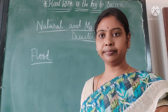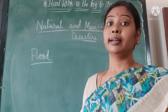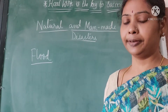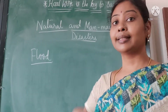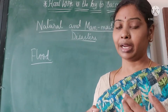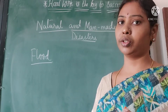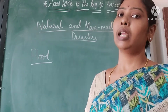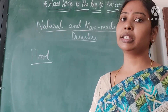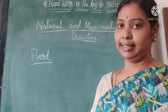Now we are going to see the first type of disaster: natural disaster — flood. What is a flood? A sudden rise in water is known as a flood. When a flood happens, a lot of human loss, economic loss, and even environmental loss happens. That is why a flood is known as a natural disaster.